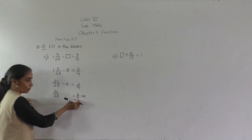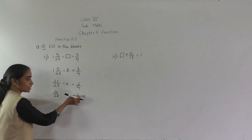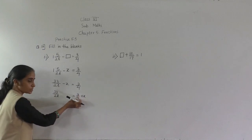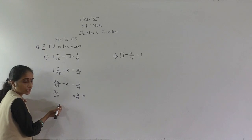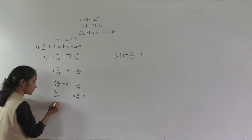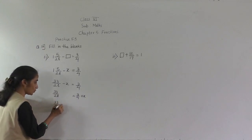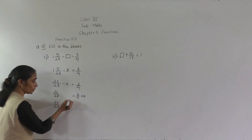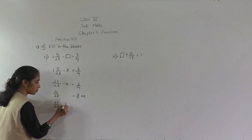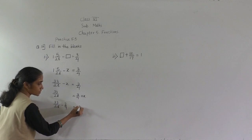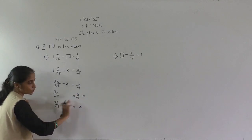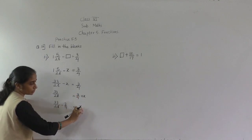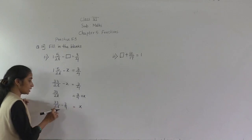We have to find the value of x. 3 upon 4 is here plus. If we transfer it to the left-hand side, then it will become minus. So x is equal to 33 upon 28 minus 3 upon 4. Only x will remain on the right-hand side.